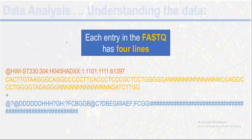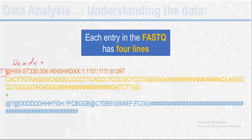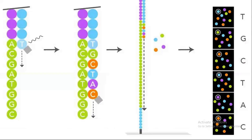Inside the FASTQ file there are thousands of reads generated after the sequencing technology. Each entry in the FASTQ file has four lines. Line number one is the header — it consists of sample information, including spot length, the slide, and different spots. Each spot has a specific location, so coordinate and location information is present.